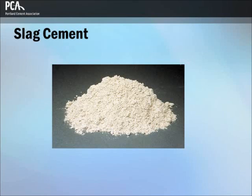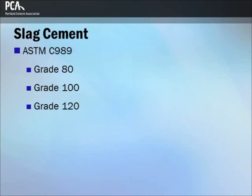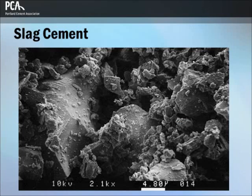Slag cement, also known as ground granulated blast furnace slag, is the glassy material formed from molten slag produced in blast furnaces as a byproduct from the production of iron used in steel making. There are three grades of slag cement in accordance with ASTM C989: Grade 80 is slag cement with a low activity index, Grade 100 is slag cement with a moderate activity index, and Grade 120 is slag cement with a high activity index. Slag cement is a ground product with most angular particles smaller than 45 microns, and the product resembles white cement.